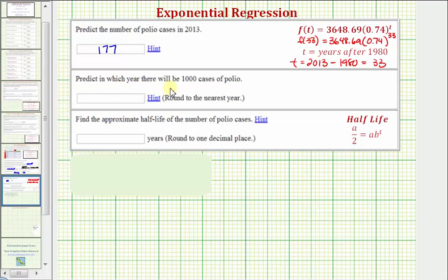Next, we want to predict in which year there will be 1,000 cases of polio. Remember, f(t) is the number of thousands of polio cases. So we actually want to find the value of t where f(t) equals 1, because when f(t) equals 1, that represents 1,000 polio cases.